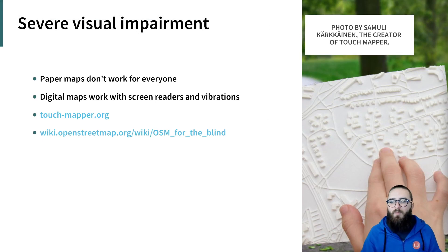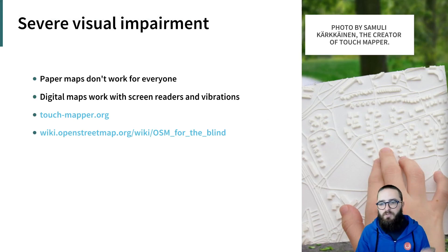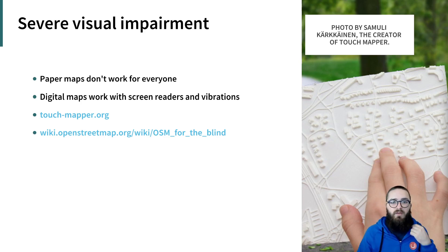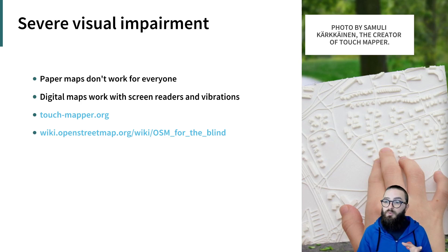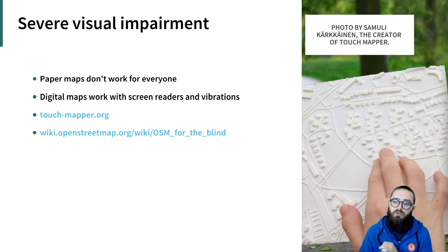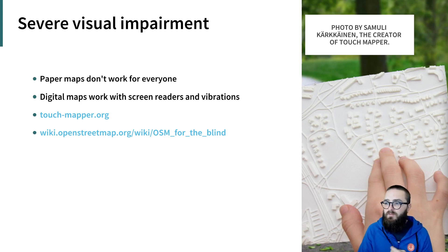Paper maps don't work well for people with severe visual impairment or blindness, but to briefly cover some of the options available: many digital mapping apps provide a reasonable navigation experience with a screen reader, using navigation directions or vibrations. It's also possible to print 3D maps based on OpenStreetMap data using services like touch-mapper.org, and OpenStreetMap has several projects to provide accessibility for blind and visually impaired persons. More information is available on the OpenStreetMap wiki.